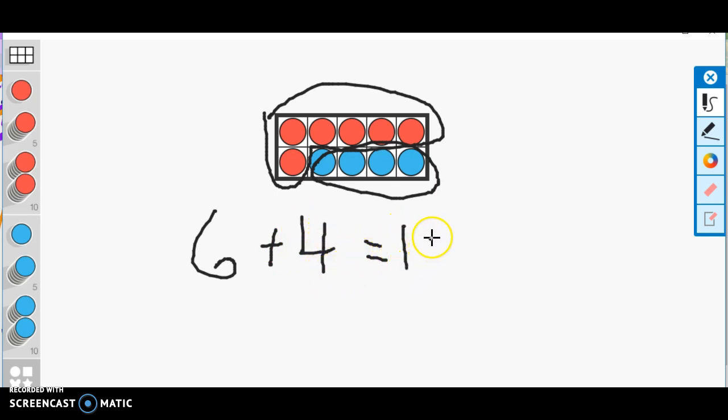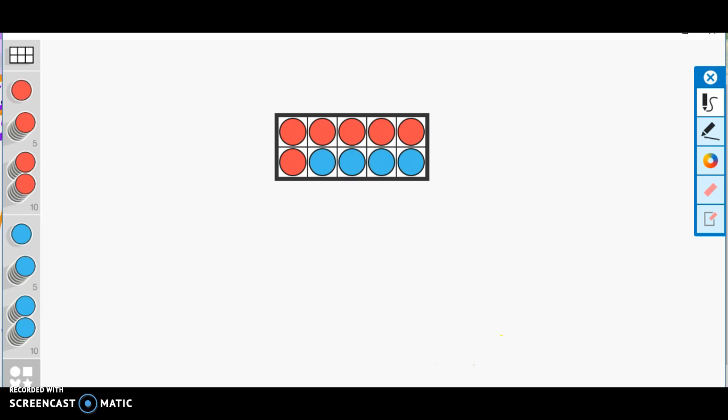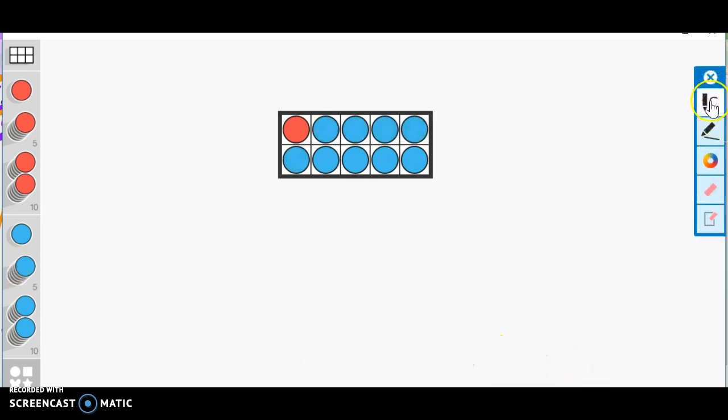Let's try another one. This time I have one red counter and nine blue counters, so I have one part of one, one part of nine.